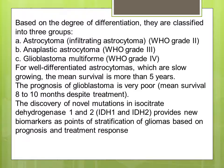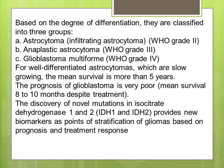The degree of differentiation of the grade means the degree of similarity of the tumor cell to the cell of origin. Grade 1 is most similar to the cell of origin; as the grade increases, similarity is lost. Grade 2 is infiltrative astrocytoma (WHO grade 2). Grade 3 is anaplastic astrocytoma (WHO grade 3). Glioblastoma multiforme is WHO grade 4. For well-differentiated astrocytomas, which are slow-growing, the mean survival is more than 5 years.